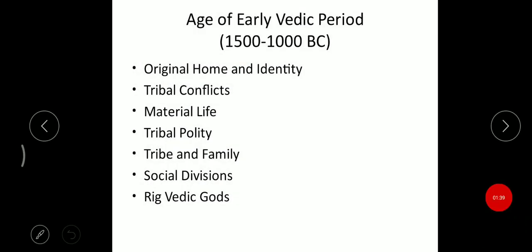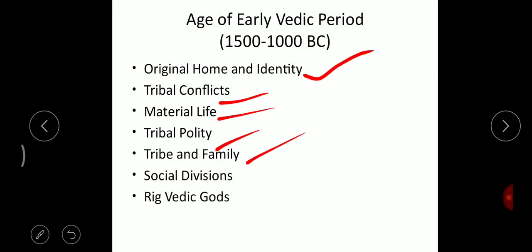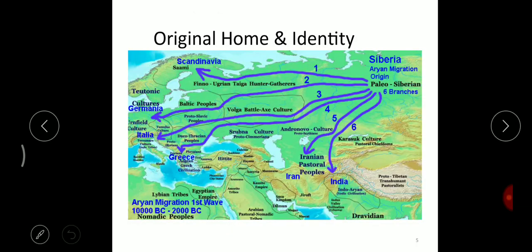At the beginning of the early Vedic period, we are going to cover how migration happened, what are the tribal conflicts, what is the materialistic life of the people, tribal polity, tribe and family, social divisions, and the Rigveda. All these topics we are going to see in this early Vedic period.